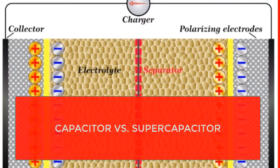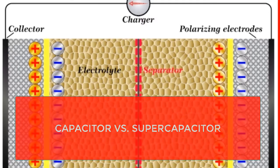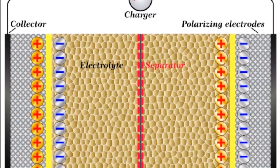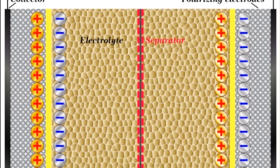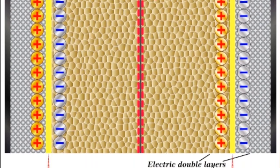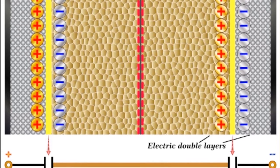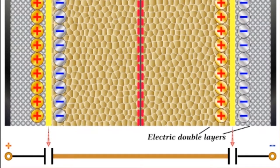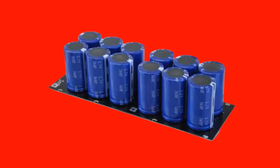Capacitor vs. Supercapacitor: supercapacitors are also known as ultracapacitors or double-layer capacitors. The key difference between supercapacitors and regular capacitors is capacitance — supercapacitors can store a much larger electric field than regular capacitors. In this diagram, you can see another major difference: like a battery, and unlike a traditional capacitor, a supercapacitor has an electrolyte.